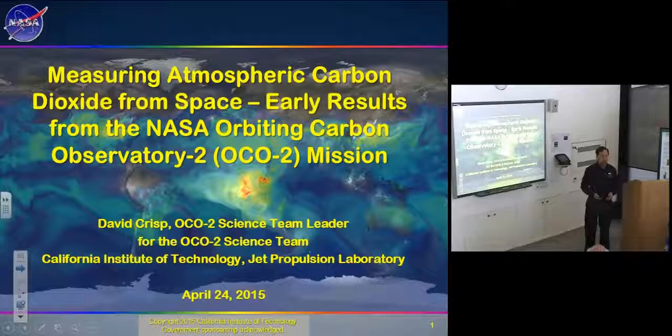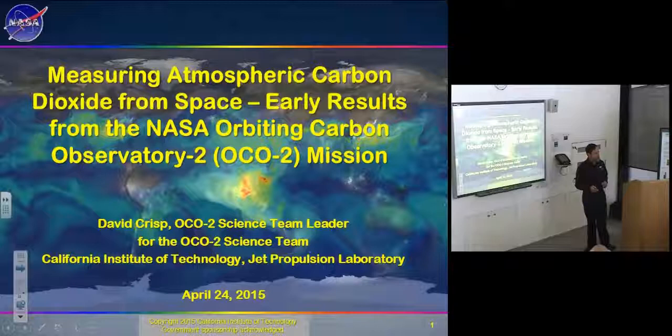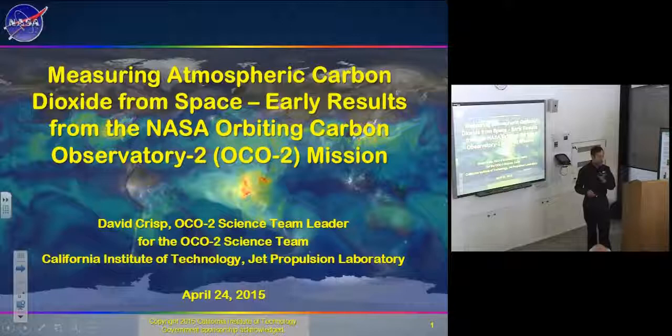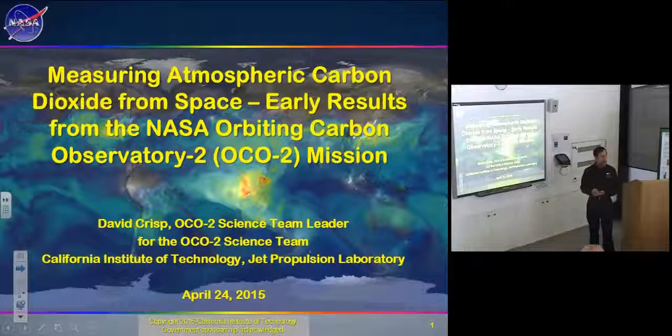Today I'm going to give you a quick overview of some of the progress we've made with NASA's first satellite designed to make measurements of atmospheric carbon dioxide with the kind of precision and sampling needed to look for its sources and sinks. The satellite is the Orbiting Carbon Observatory 2. We'll start with an overview of the carbon cycle and the problems we're facing today, so you'll understand why we need satellites as well as ground-based measurements to understand and manage this problem.